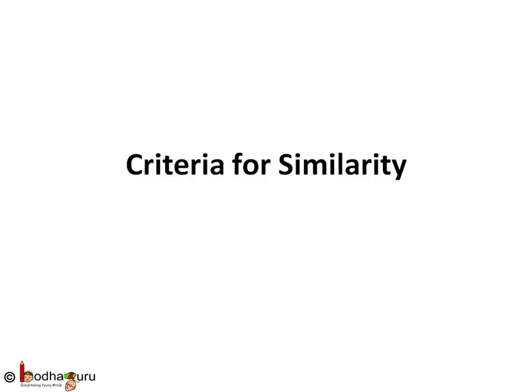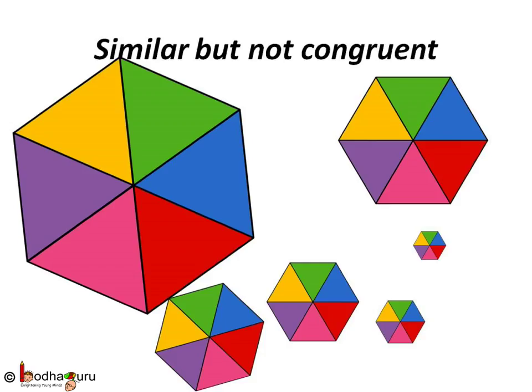Hello friends, in this lesson we shall learn what is the criteria for similarity between two shapes. Two objects can be similar but not congruent, but if two objects are congruent they are similar too.